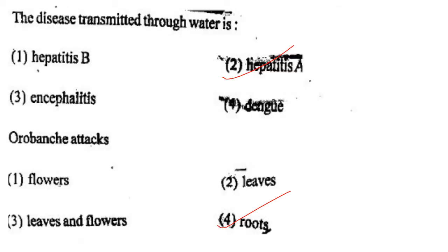Next one: The disease transmitted through water is option 1, hepatitis B; option 2, hepatitis A; option 3, encephalitis; option 4, dengue. Answer is option 2: hepatitis A.